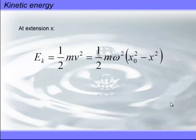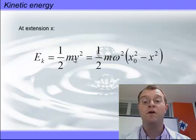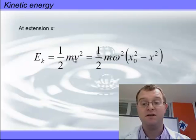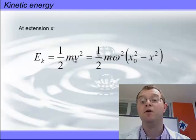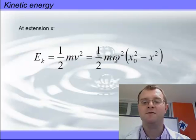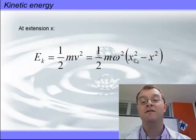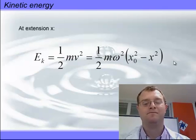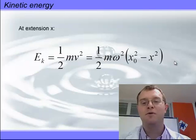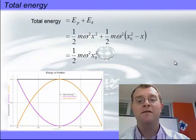Now, with kinetic energy, obviously half times mass times the velocity squared. We know that we can calculate velocity. So, this means that when I put that value in, I get half times mass times the angular frequency squared multiplied by the amplitude squared minus the displacement squared.